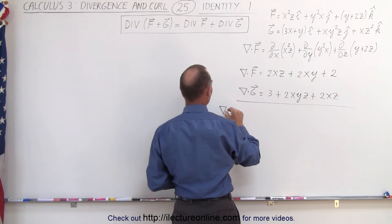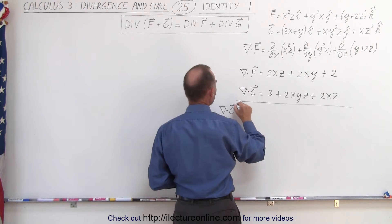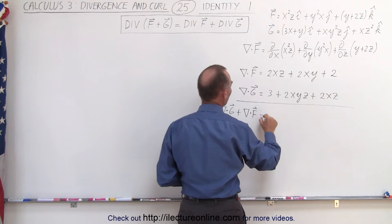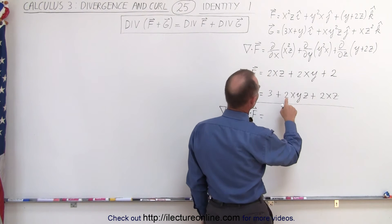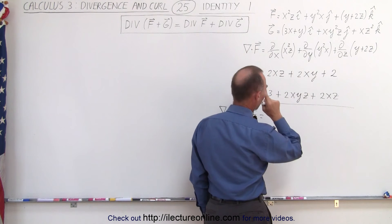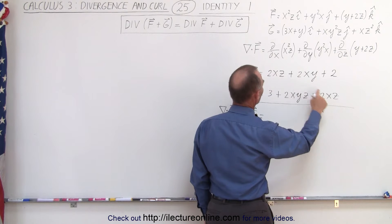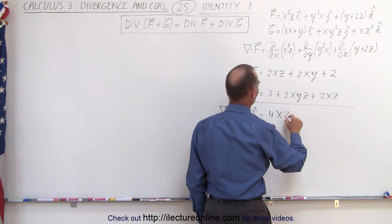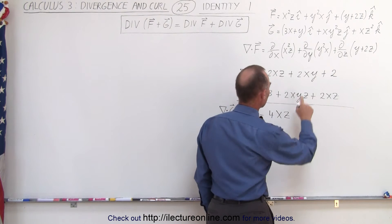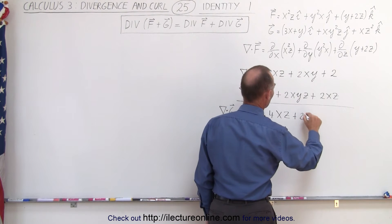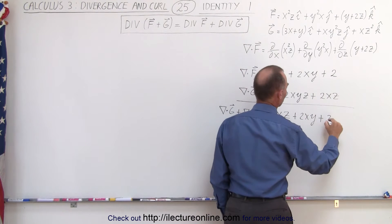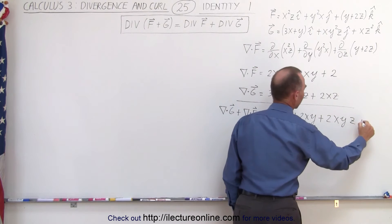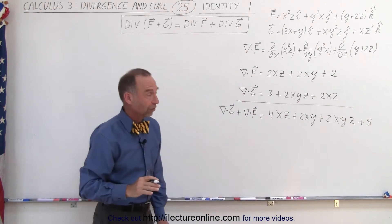So we have the sum — the divergence of g plus the divergence of f. When we add these together we get the following. We have an xz and another xz, so when we add those together that gives us 4xz, plus 2xy, plus 2xyz, and 2 plus 3 gives us 5. So that's the sum of those two divergences.